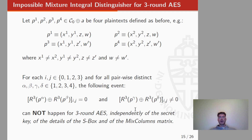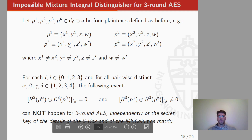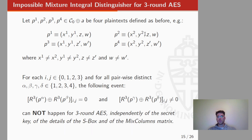This zero-sum for two rounds is a starting point for our new distinguisher on three rounds of AES. Consider four plaintexts P1, P2, P3, and P4 in the same coset of a column space C0. These chosen plaintexts are defined as follows: P1 is defined as (x1, y1, z, w), P2 as (x2, y2, z, w) where z and w are equal, x1 ≠ x2, and y1 ≠ y2. Then P3 and P4 share the same first two variables as P1 and P2, respectively, but use z' and w' defined from z and w.